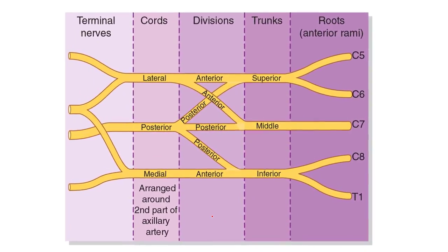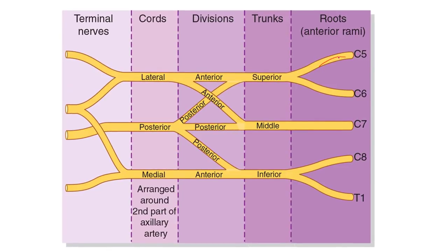The 5th and 6th cervical nerves form the upper trunk, the 7th forms the middle trunk, and the 8th and 1st thoracic form the lower trunk. This stage lies in the root of the neck. Then behind the clavicle, each trunk divides into anterior and posterior divisions. The 3 posterior divisions unite to form the posterior cord.